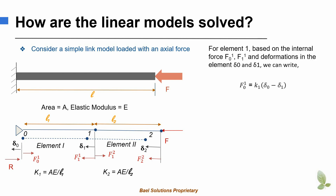For element 1, based on the internal forces F01 and F11 with the deformations delta 0 and delta 1, we can write: F01 is equal to K1 times (delta 0 minus delta 1). Here, K1 is the axial stiffness of the link, given by K1 = A·E / L1. The term (delta 0 minus delta 1) represents the relative deformation in element 1 at node 0 with respect to node 1. The relative deformation multiplied by the axial stiffness gives the reaction force F01.